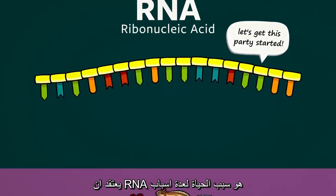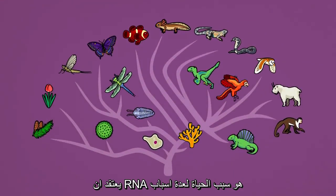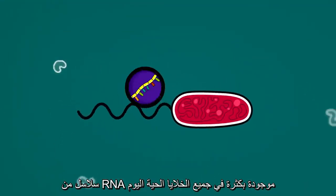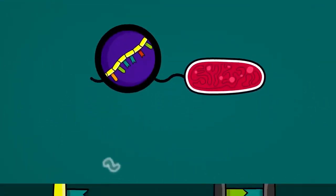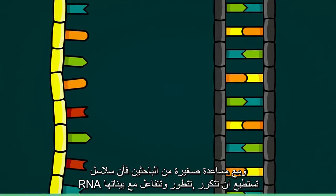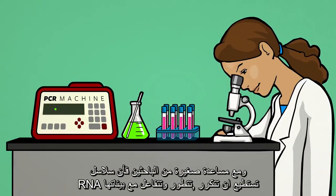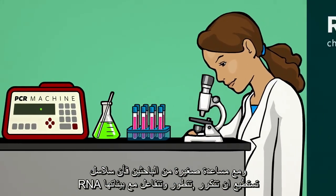RNA is thought to have given rise to life for several reasons. Chains of RNA are found abundantly in all living cells today. RNA is a close chemical cousin to DNA. And with very little help from researchers, RNA chains can replicate, evolve, and interact with their environments.